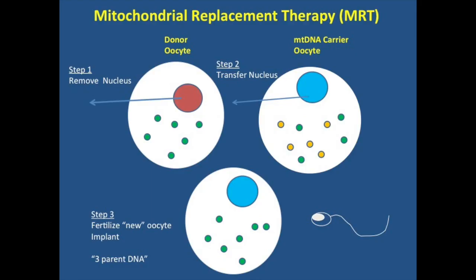Mitochondrial replacement therapy is really genome transfer, and this is not available for clinical use — we are researching it in the United States and other places in the world. Step one: we take the nucleus out of a healthy donor from the IVF clinic, implant the nucleus from the mito mom, and then fertilize the egg. In the media, you'll hear this called three-parent DNA: mito mom, dad, and the healthy donor.